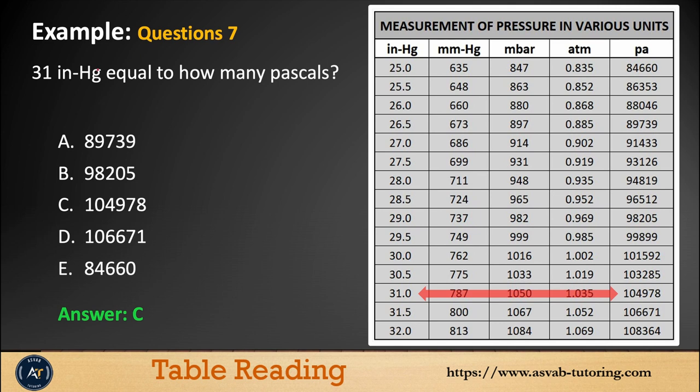Next is question 7. You could see here, 31 inch Hg equal to how many Pascal? You have to look at this inch Hg column and find where is 31. You could see 31 right here. In inch Hg, you have to find the value in Pascal. Go to the Pascal column. The correct answer is answer option C.